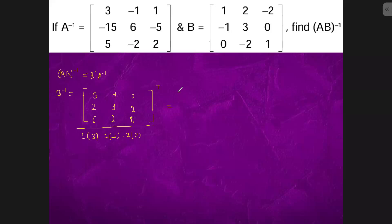This is B inverse. It will come out to be 3, 1, 2, 2, 1, 2, 6, 2, 5.